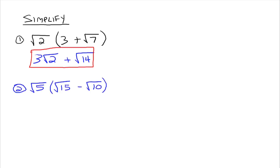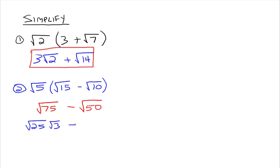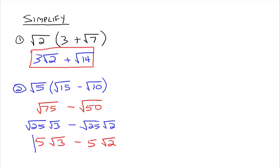Let's try another one using the distributive property. The square root of 5 times the square root of 15 multiplies out to be the square root of 75, minus the square root of 5 times the square root of 10, which gives the square root of 50. Now, the square root of 75 can be simplified because 25 divides into 75: that's the square root of 25 times the square root of 3. Similarly, the square root of 50 is the square root of 25 times the square root of 2. This gives us 5 times the square root of 3 minus 5 times the square root of 2. These are not like radicals, so that's as far as we can simplify.